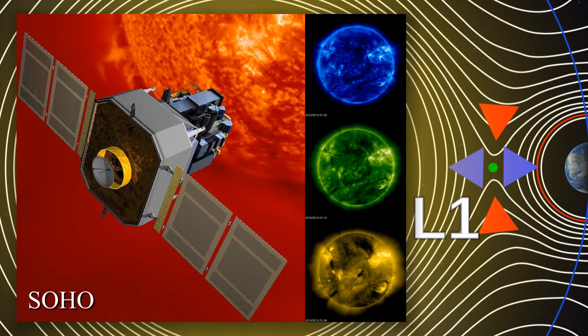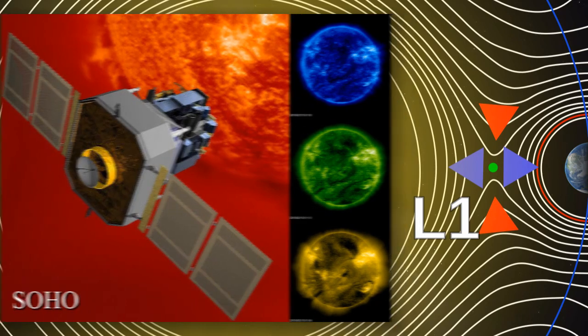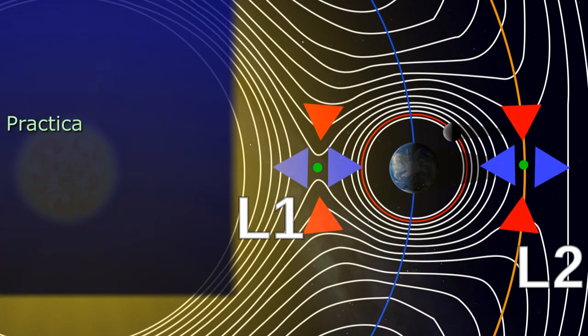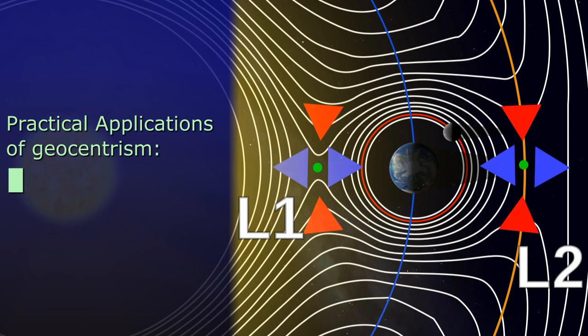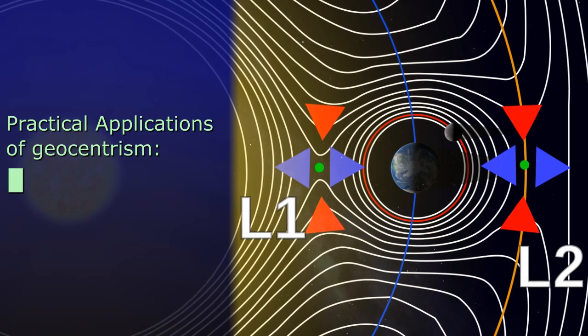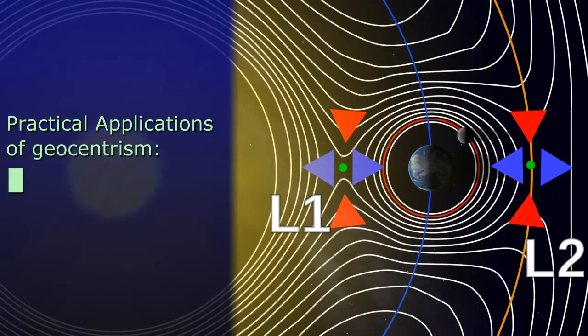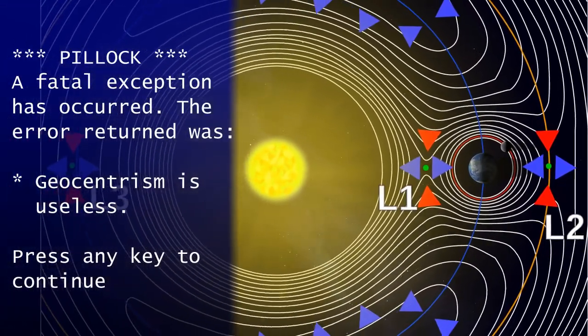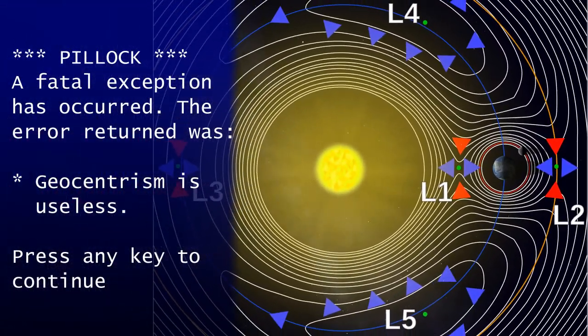The L1 point is the home of Soho, giving it its uninterrupted view of the Sun. Both the L1 and L2 points for Earth are beyond the orbit of the Moon, and are used because they exist and they work, which rather knackers the geocentrist claim that gravity stops working at sufficiently close range to explain geostationary satellites.